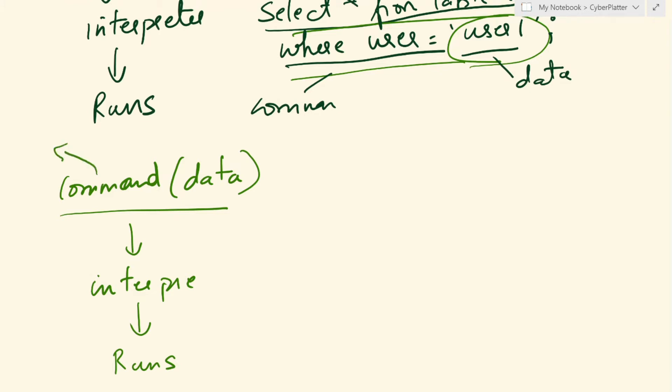The command is supposed to be controlled by the web application and the data is supposed to be controlled by the user. Suppose you have a form where it says user name. You're putting your user name. That is the data that you're inputting and what happens after that, that is the command should be controlled by the web application. This is our normal behavior.